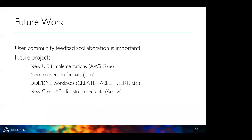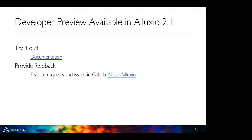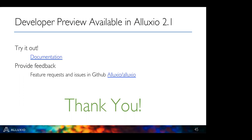To summarize the demo: we attached an existing Hive database to the Alluxio catalog via the 'attachdb' command, which served all necessary metadata to Presto. We then transformed the store sales table by coalescing small files and converting CSV to Parquet, achieving compute-optimized data. This shows the benefit of compute-optimized data and metadata for SQL applications. The developer preview is available in Alluxio 2.1. We want to work with the community for feedback and collaboration, with future plans including new UDB implementations, additional conversion formats, DDL/DML command support, and new client APIs. Thank you — we'll now take questions.